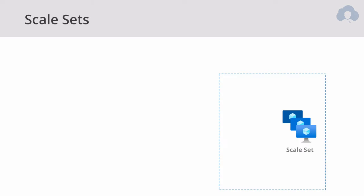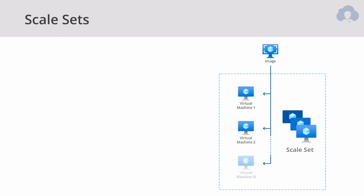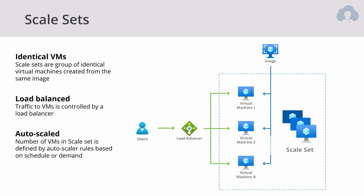A scale set is a feature of virtual machines to allow for higher-scale computing. It is created from a single image, and with that image you create one or more identical virtual machines. Additionally, a load balancer is provided, so whenever traffic comes to your scale set it is automatically load balanced across those servers. With auto-scaling features, you can define auto-scaler rules based on a schedule or demand to create more virtual machines based on those rules.